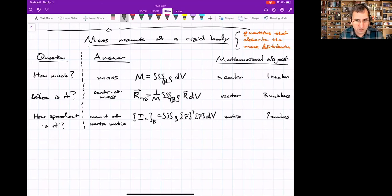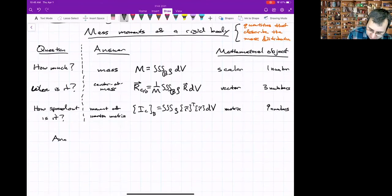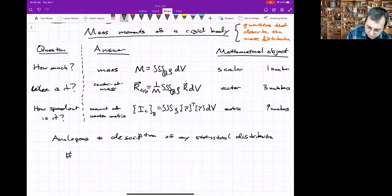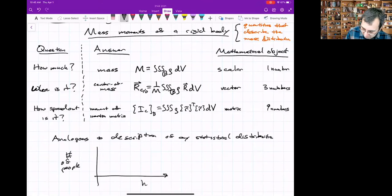These are sometimes also referred to as the moments. Not to be confused with the moment that means like a torque. You could have a moment for any statistical distribution. This is analogous to a description of any statistical distribution, like if we're talking about the number of people who have a given height.